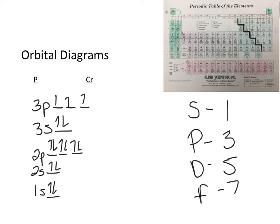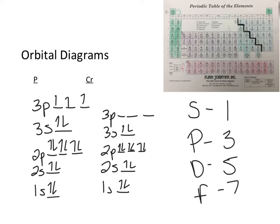Now let's try chromium. So I start off the same way again. So I have a 1S, one orbital, two electrons, 2S, one orbital, two electrons, 2P, three orbitals, six electrons. Now this is where it gets a little tricky. I have 4S, one orbital, two electrons. And now I'm in the 3D and I have five orbitals total, as you can see right there. So I want to put five lines next to the D.